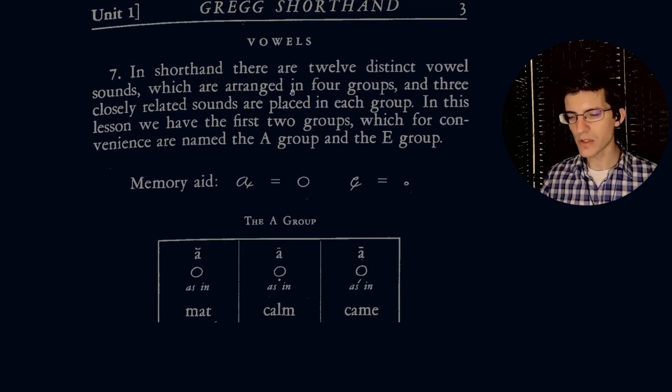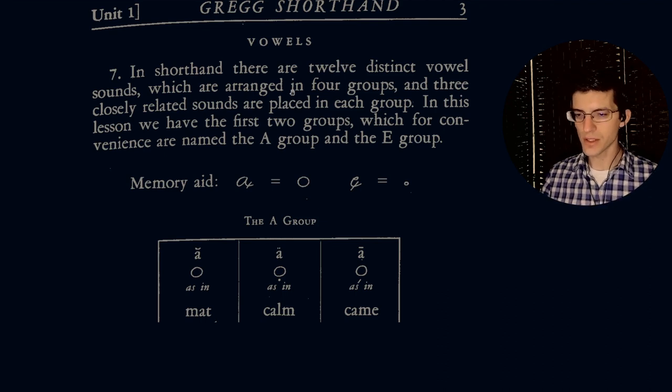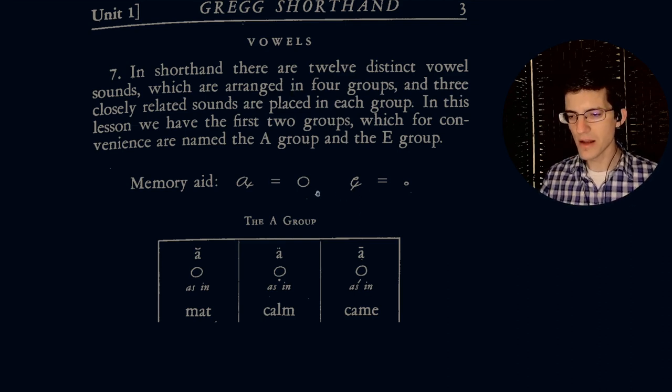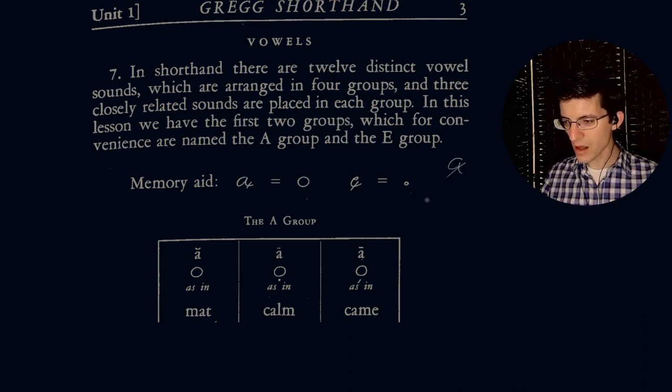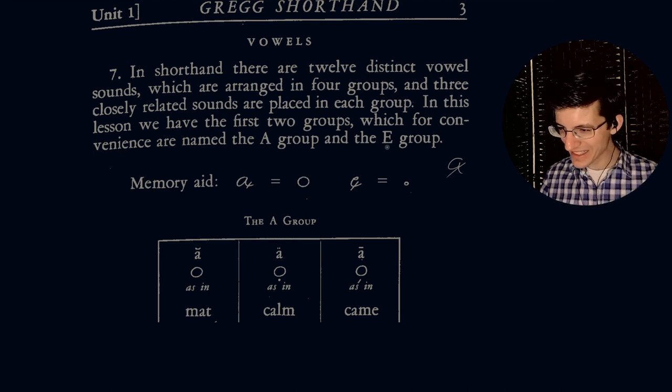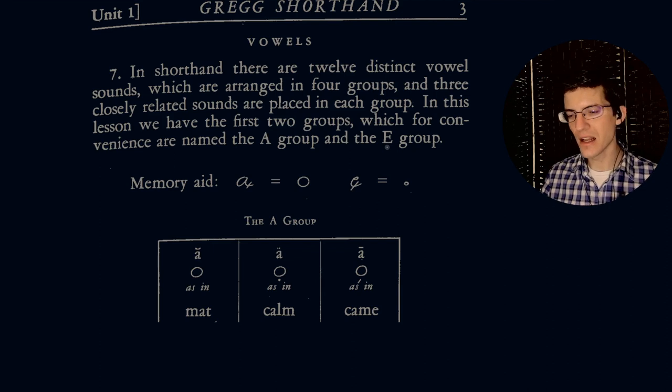Let's go ahead and cover vowels. We still have time. In shorthand, there are 12 distinct vowel sounds, which are arranged in four groups. And three closely related sounds are placed in each group. In this lesson, we have the first two groups, which for convenience are named the A group and the E group. Honestly, just memorize it. You can use memory aids, but the key here, as they say in the preface, is the only way you're going to learn this is by drilling. So you have to drill, drill, drill until it's second nature.